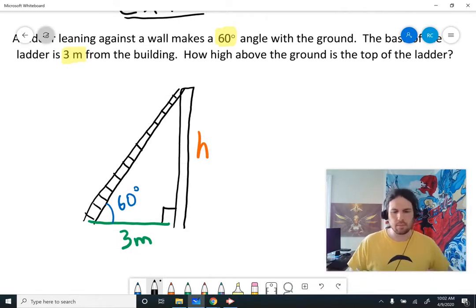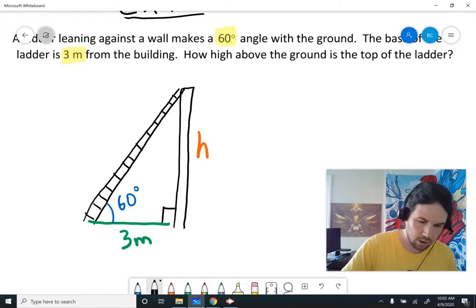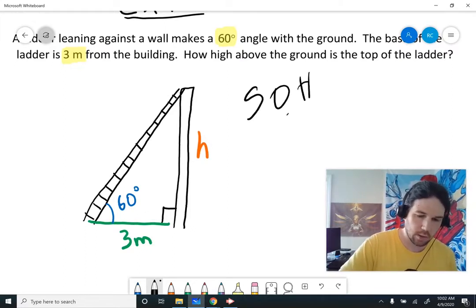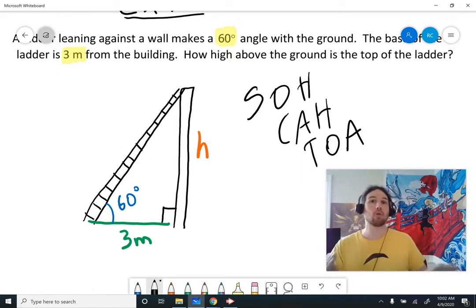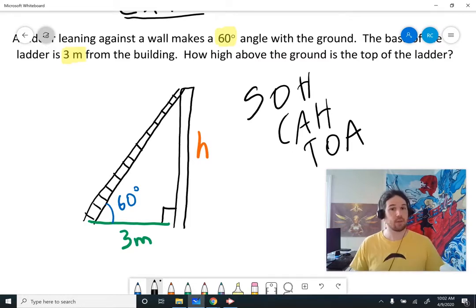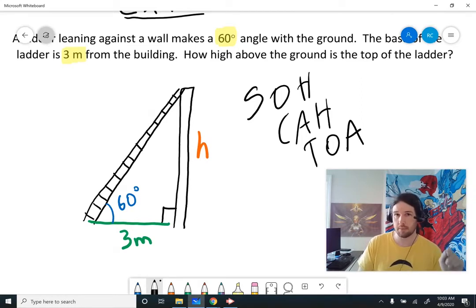Now, in the last two examples, we needed to use SOHCAHTOA. We needed to use those ratios for the last couple of examples, and that works here. We can totally set up SOHCAHTOA and we can solve it out that way. But I think there's an easier way. Think about it. Take a look at this triangle. There should be something very familiar about this triangle if you've been watching my videos.